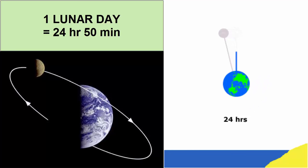What does that mean? After the Earth is rotated once relative to the Sun, 24 hours, it has to rotate another 50 minutes to catch up with the Moon, which during that 24 hours moved 1/29th its way around its orbit around the Earth.